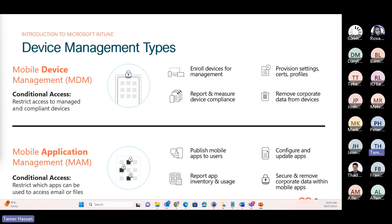Those apps are in a fence — a bubble — and from that bubble, you cannot copy data out. So I can look at Teams, Outlook, or OneDrive within my work profile, but I cannot copy data from that to WhatsApp or Facebook on my personal profile. That can actually be disabled both ways — you can disable copy and paste both ways. But for ease of use, you can allow copying from your personal profile to the corporate work profile applications. It depends on how you want to control that — you can leave copy and paste both ways, disable it one way, or disable it both ways. It's up to the corporate how they manage that.